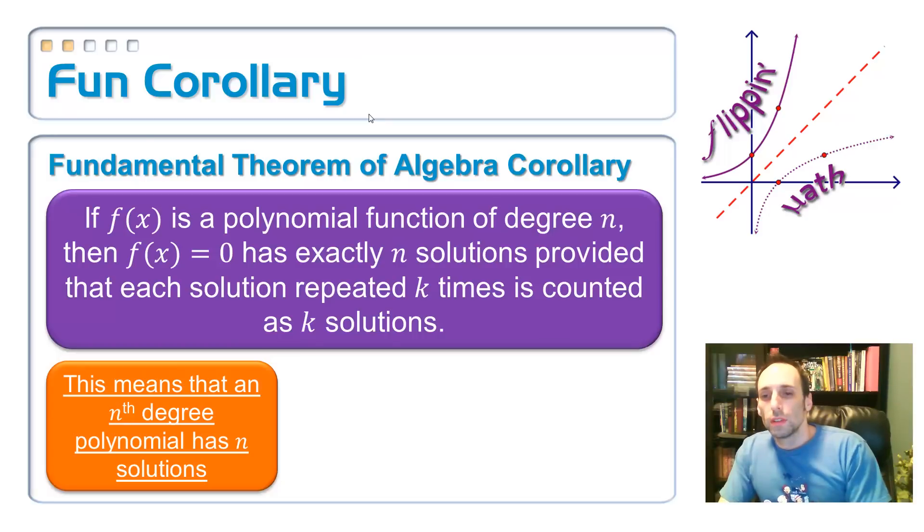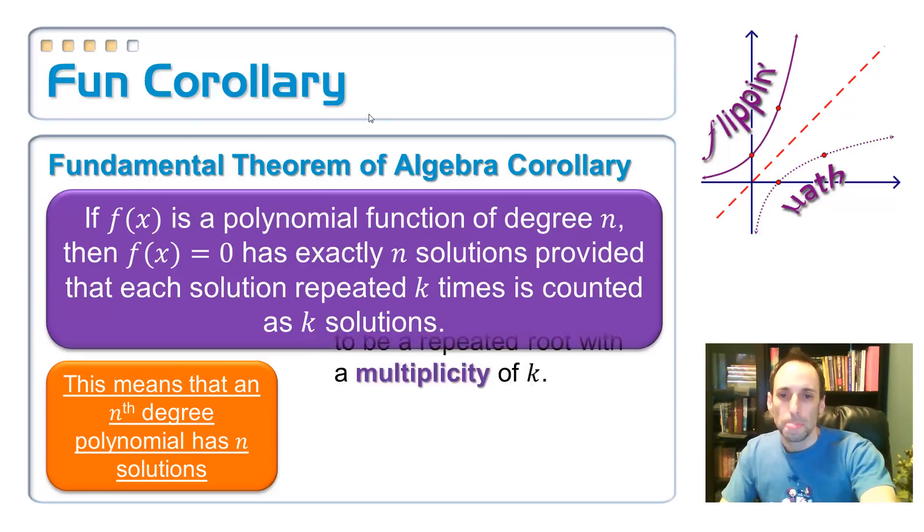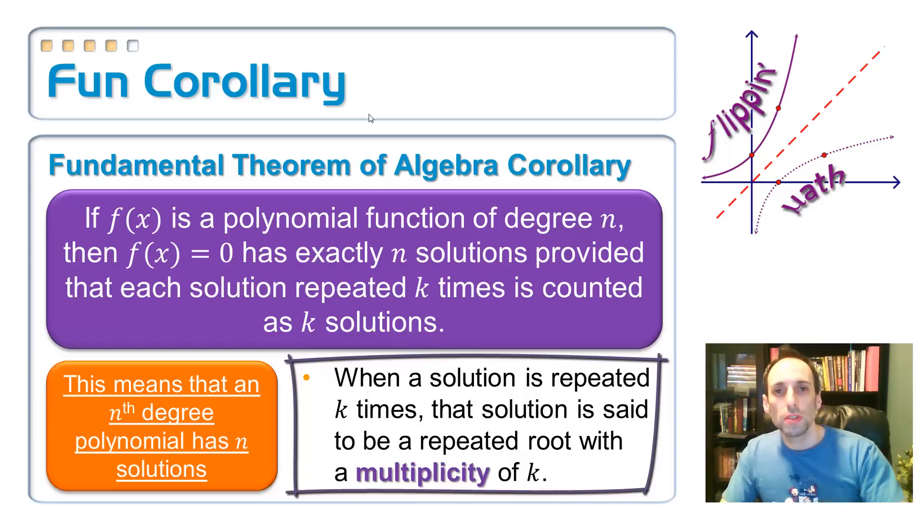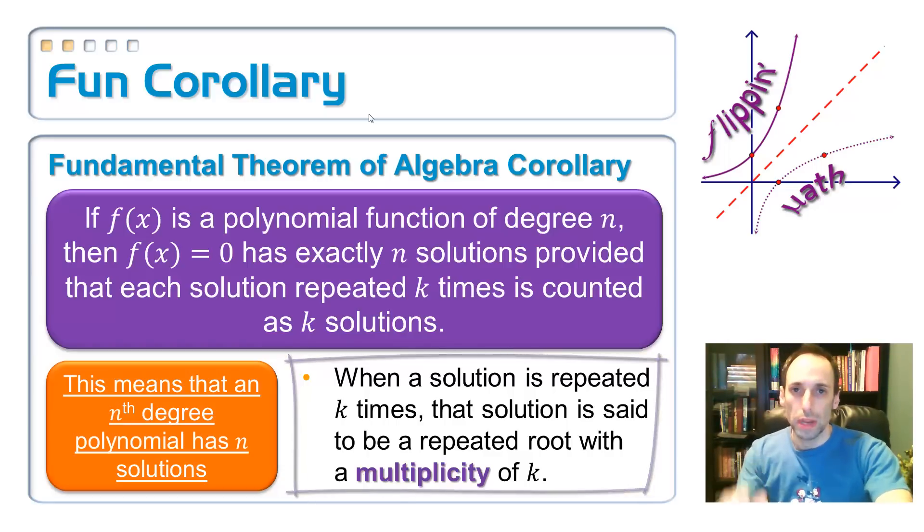So, what this means is, nth degree polynomial has exactly n solutions. Fifth degree has five, fourth degree has four, that's what it means. Now, this whole thing with repeated roots, if it repeats k times, it's called a repeated root with multiplicity of k. So, there's a new vocabulary word. Multiplicity just means it occurs more than once, however many times it's raised to that power.